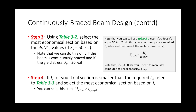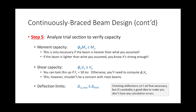Table 3-2 gives us a trial shape. We check its moment of inertia — if it's big enough, we're fine. If not, the design is governed by deflections, not moment capacity, so we go to Table 3-3 to look up a section there. We go back and forth until we find the lightest shape that works for both criteria, then analyze for moment capacity, shear capacity, and deflection limits.